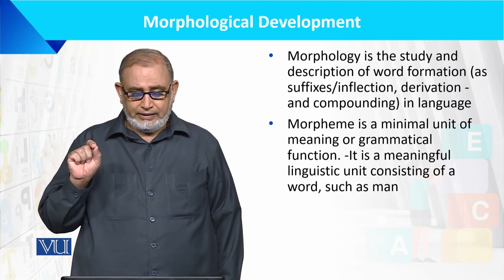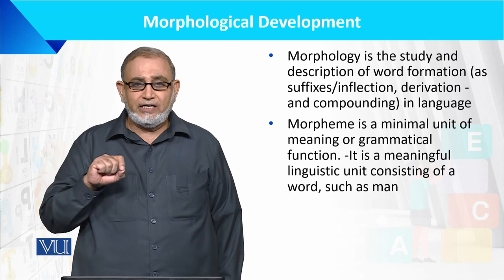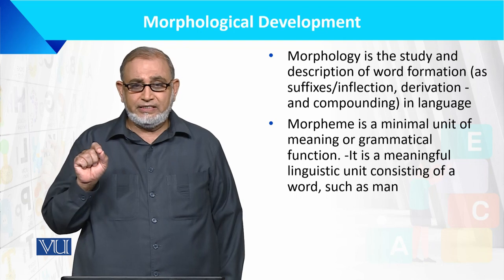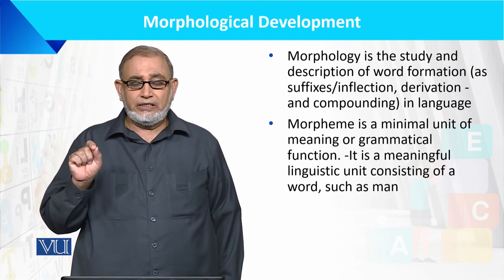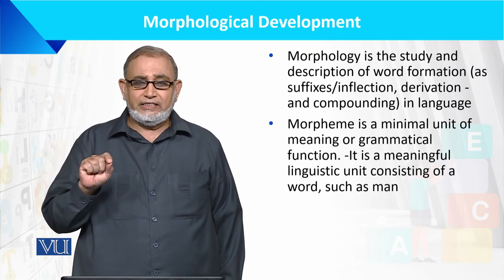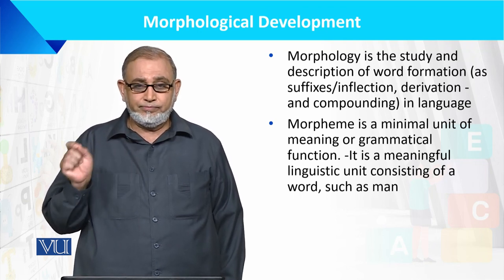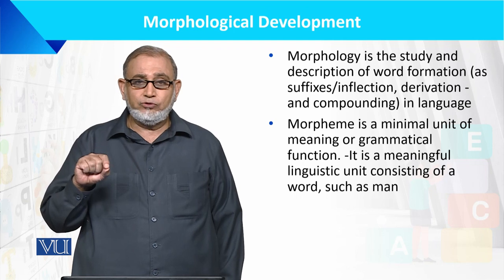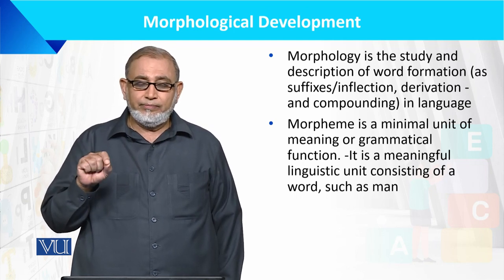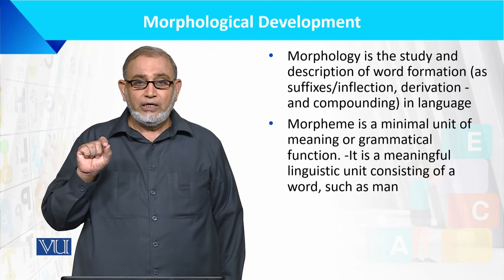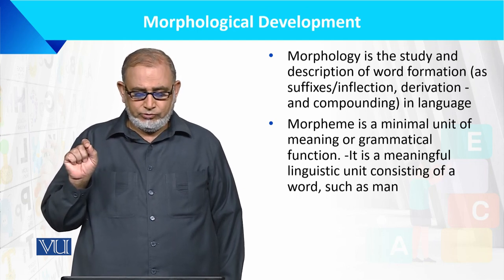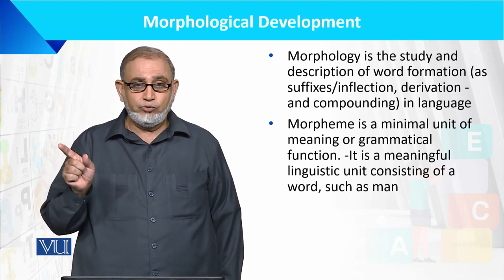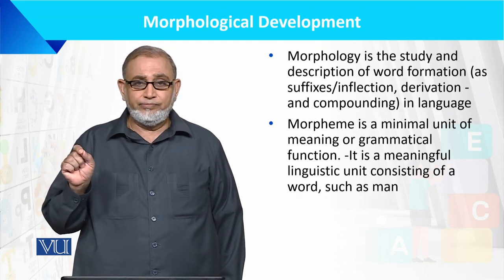Morpheme ایک minimal unit ہے جس کا grammatical function بھی ہے۔ اردو میں ہم انہیں سابقہ یا لاحقہ کہتے ہیں — یہ کسی word کے ساتھ add ہو کر اس کے meanings میں اضافہ کرتے ہیں۔ جیسے 'man' single morpheme والا word ہے اور کچھ words میں ایک سے زیادہ morphemes ہوتے ہیں۔